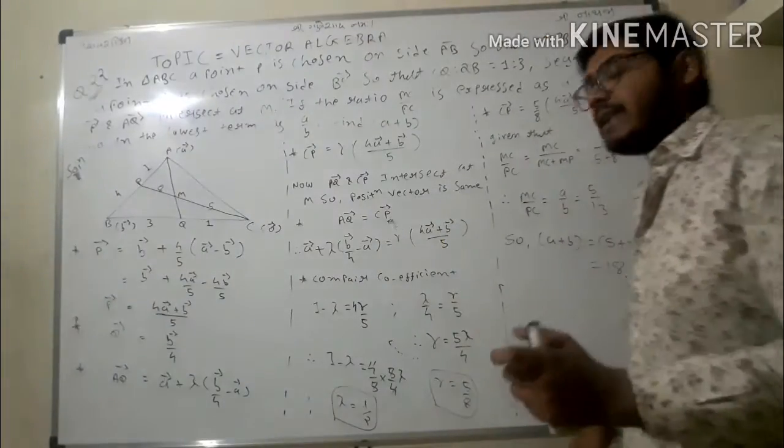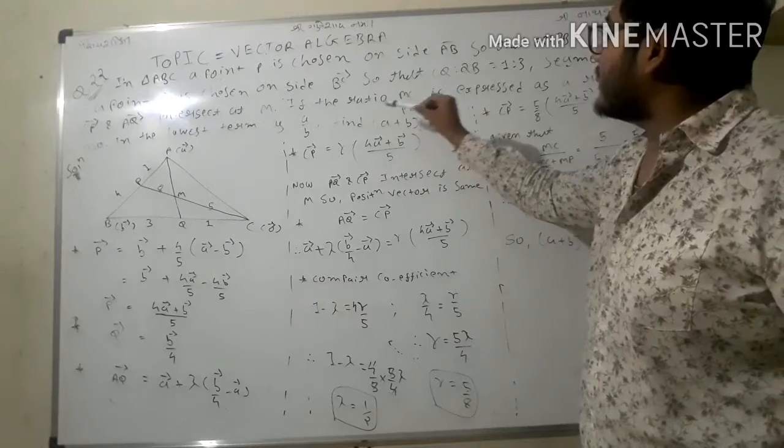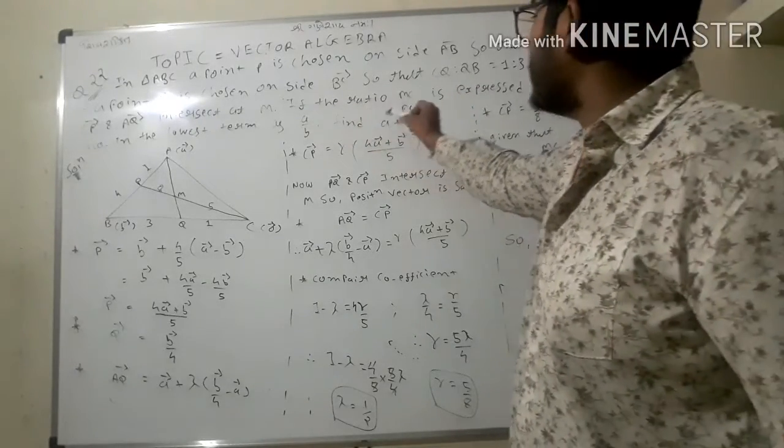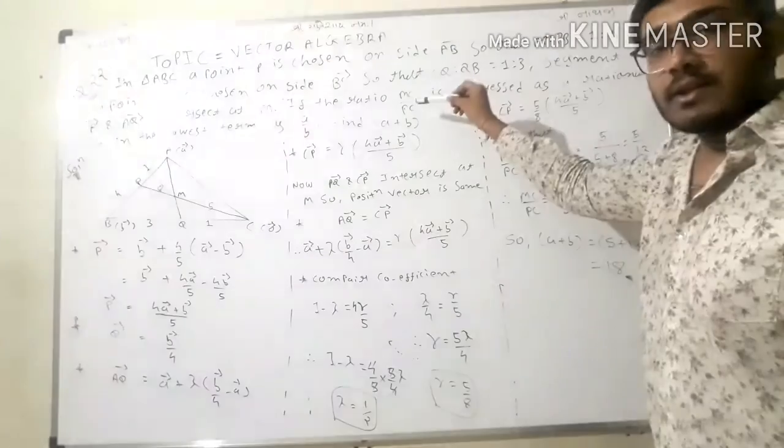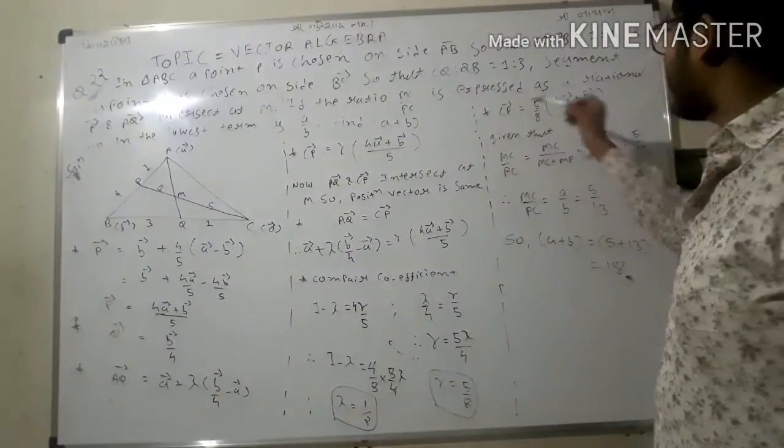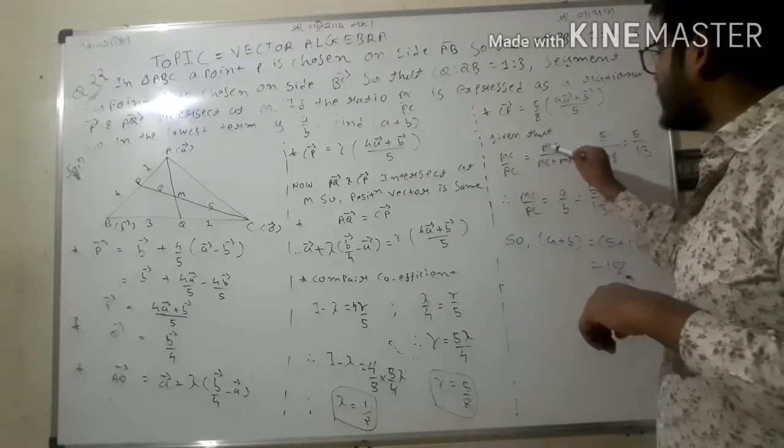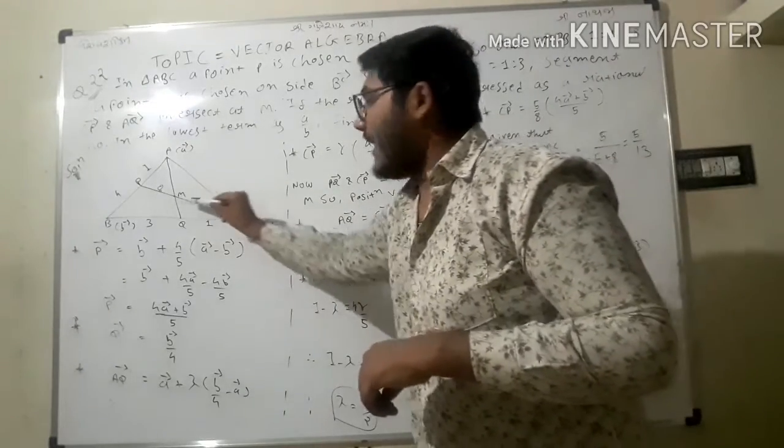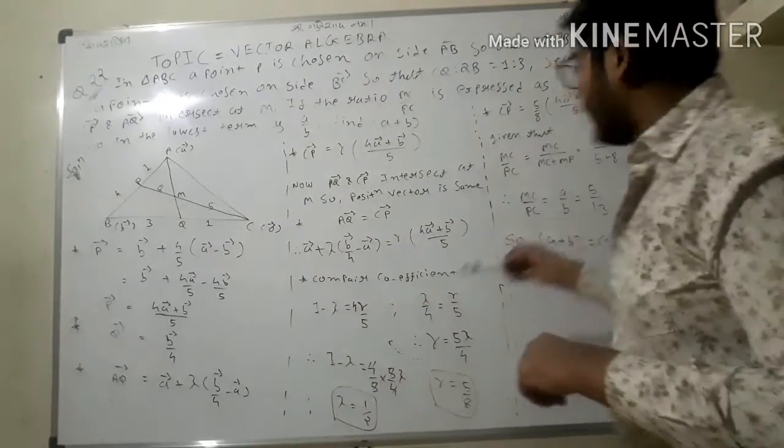We have to reach the last step. Given that if the ratio MC upon PC is expressed in rational number, what is MC upon PC? PC is MC plus MP.